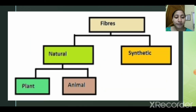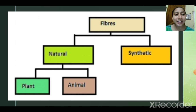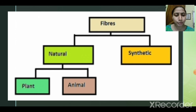We have two types of fibers. Fibers are very thin thread-like strands from which cloth is made. Cloth is made from fiber.